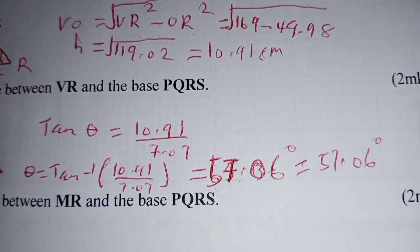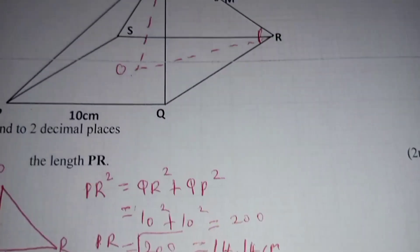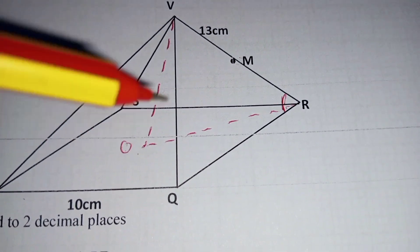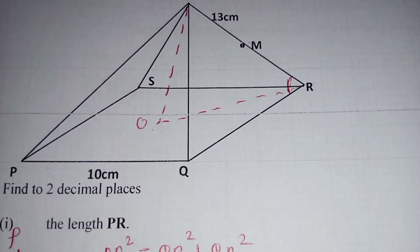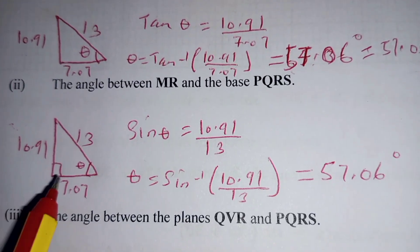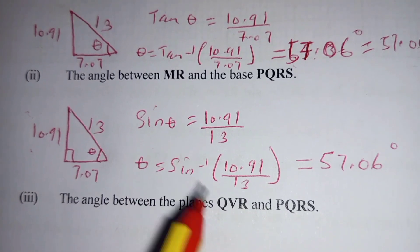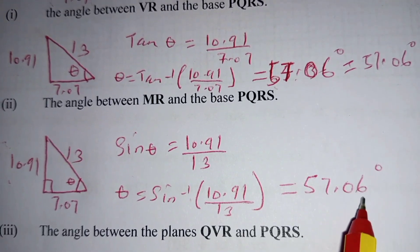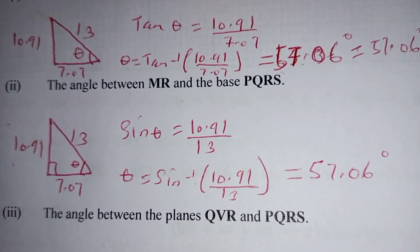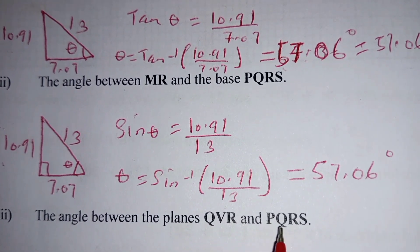Now for the angle between MR and the base PQRS. The projection of MR on the plane is RO. The angle between MR and its projection is given by sin θ equals the opposite 10.91 divided by the hypotenuse 13, so theta is the sine inverse of that — giving the angle between MR and the base PQRS.